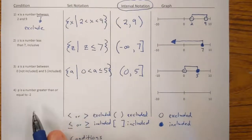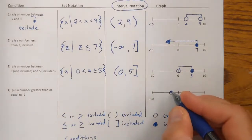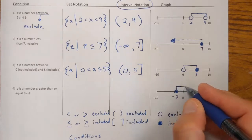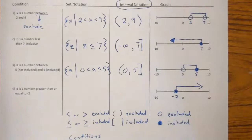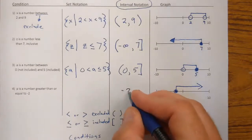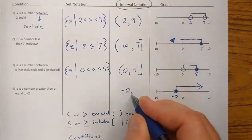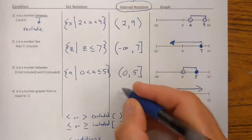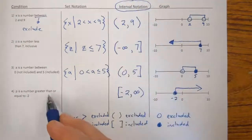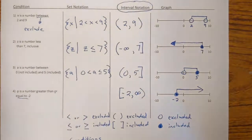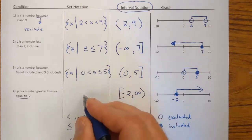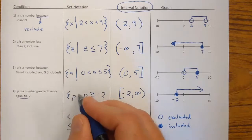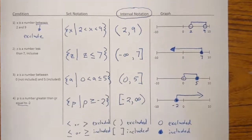Our last example: P is a number greater than or equal to negative 2 — so negative 2 is included. On the number line, I shade everything to the right of negative 2. There's no right endpoint; it goes on forever and ever, so I use positive infinity. The interval notation is [-2, ∞) — square bracket for negative 2 since it's included, parenthesis for infinity by definition. The set notation is P ≥ -2, or all values of P such that P is greater than or equal to negative 2.